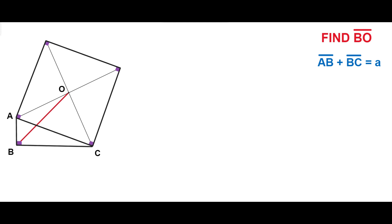As we know, the diagonals of the square are perpendicular bisectors. So the triangle AOC is an isosceles right triangle. The angle AOC is 90 degrees, and the angles OAC and OCA are 45 degrees each.